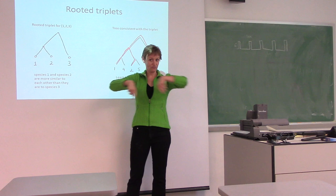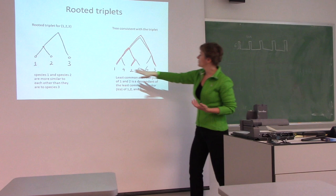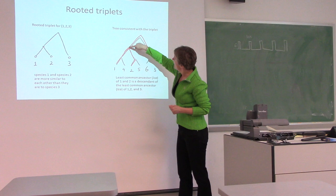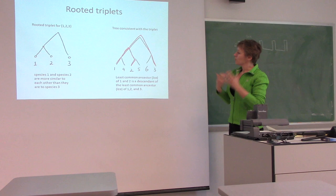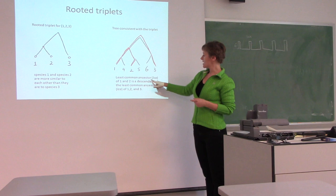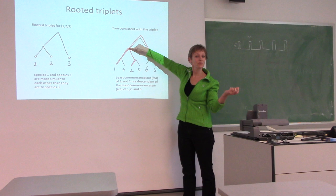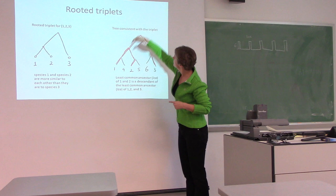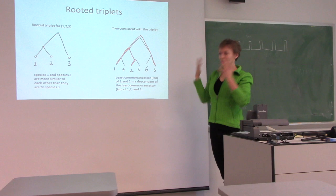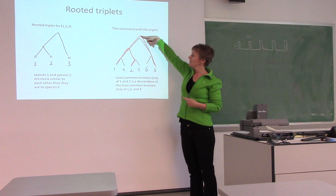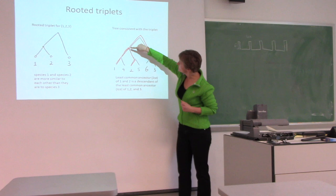Here's a tree consistent with that information — it has more species than just one, two, and three, but in this tree one and two branch off later than three. More specifically, this tree is consistent with this triplet because the least common ancestor of one and two is a descendant of the least common ancestor of one, two, and three.